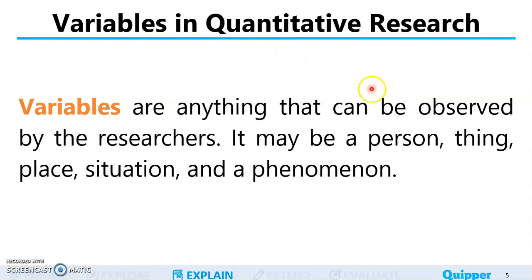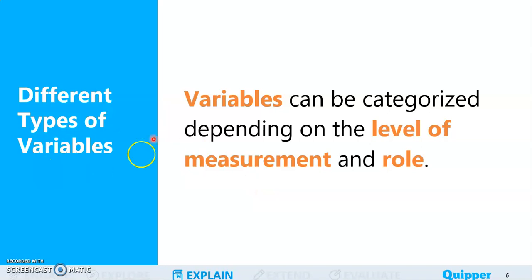So variables in quantitative research specifically — variables are anything that can be observed by the researchers, whether it's a person, thing, place, situation, or a phenomenon. There are different types of variables, and they are categorized depending on the level of measurement and its role in research.